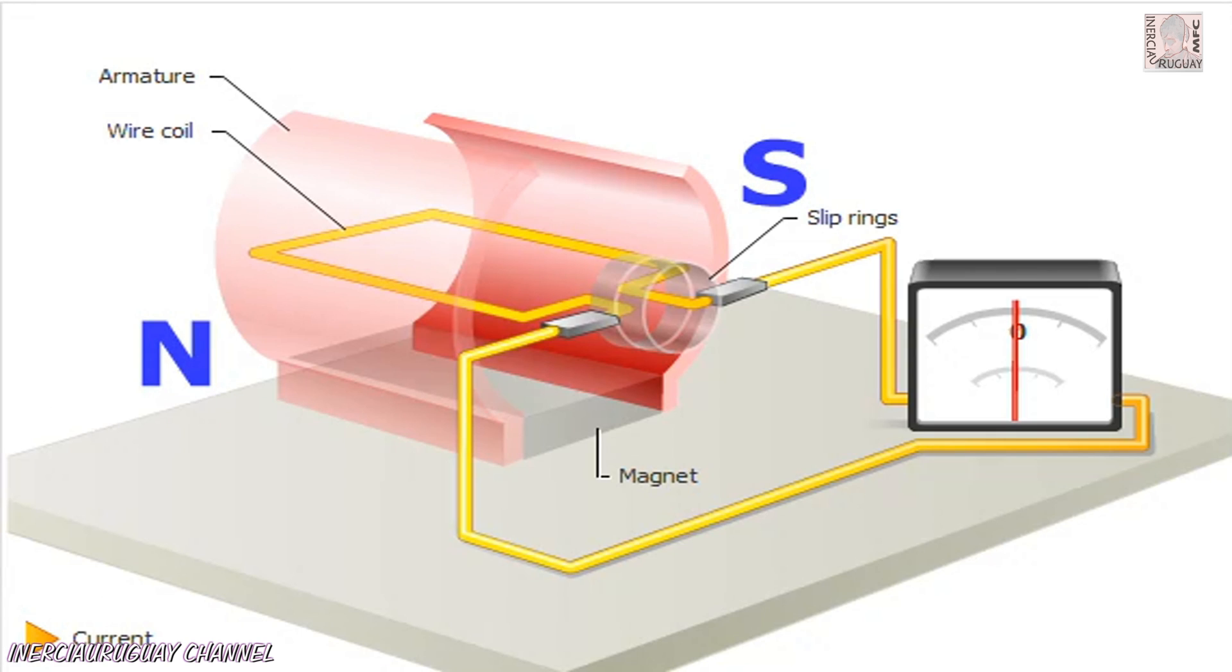An armature consisting of coils of wire wrapped around an iron core is rotated in a static magnetic field. The movement of the coil through the field causes an electric current to flow in the wires.